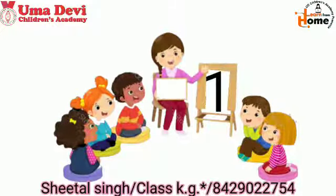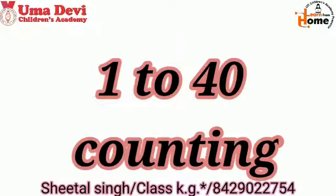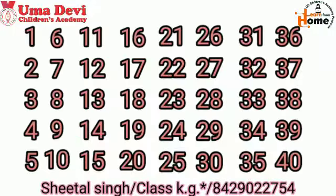Now let's start class. First we will revise numbers from one to forty. One, two, three, four, five, six, seven, eight, nine, ten, eleven, twelve, thirteen, fourteen, fifteen, sixteen, seventeen, eighteen, nineteen, twenty, twenty-one, twenty-two, twenty-three, twenty-four, twenty-five, twenty-six, twenty-seven, twenty-eight, twenty-nine, thirty, 31, 32, 33, 34, 35, 36, 37, 38, 39, 40.